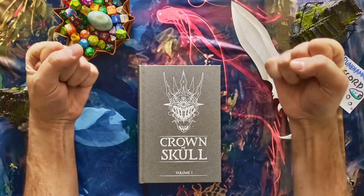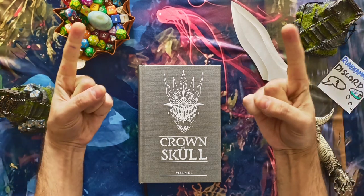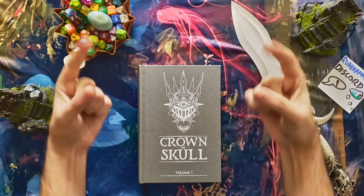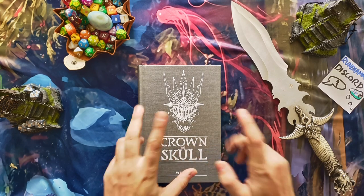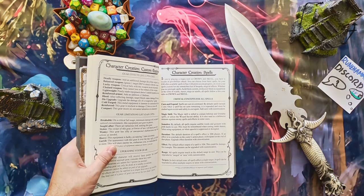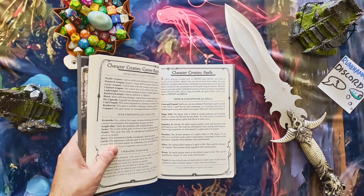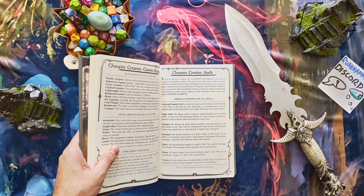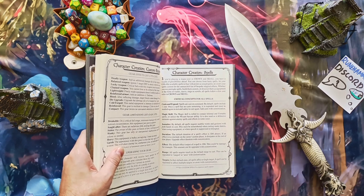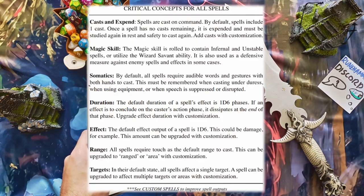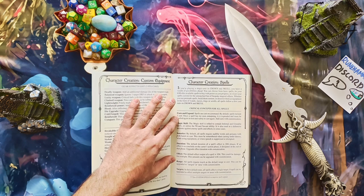Welcome to the episode about magic. To make it easier on the player and on the GM, the magic system starts up pretty simple. You have your spells, and each spell has some default values that you can modify with upgrades or customization. Let's talk about casts first.